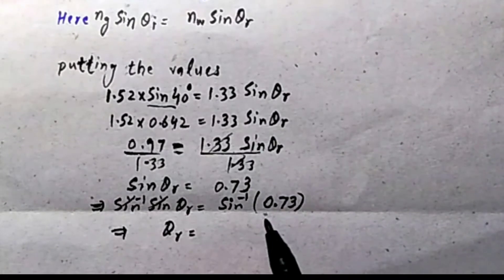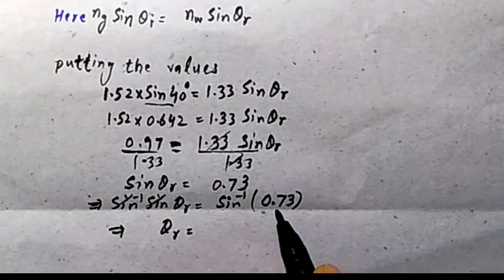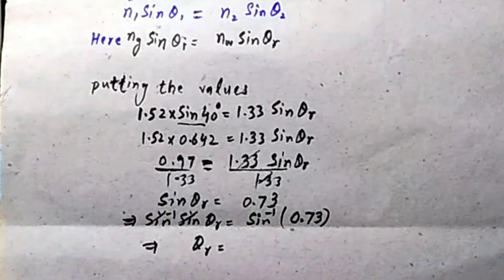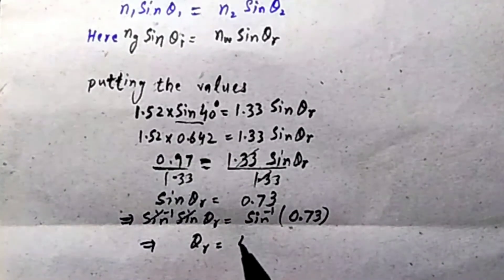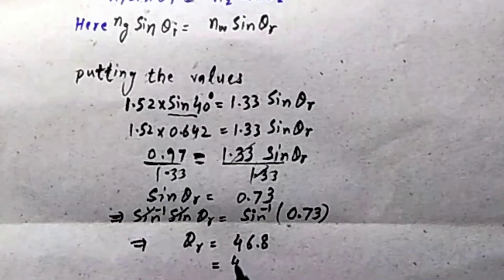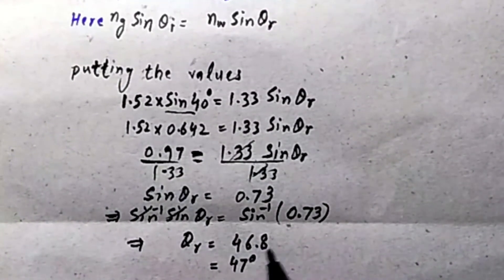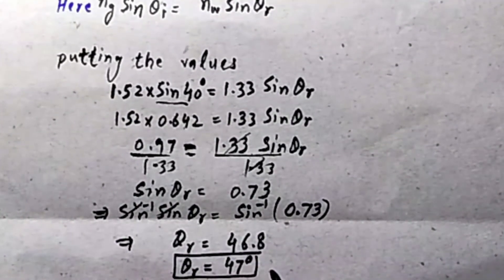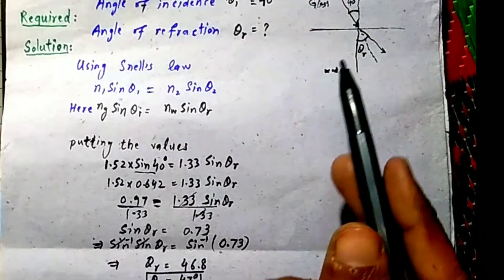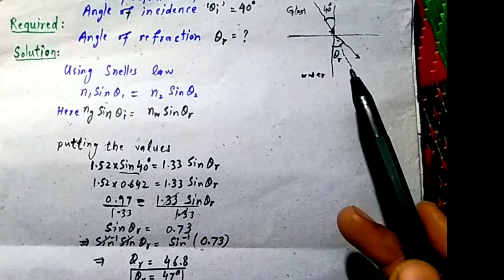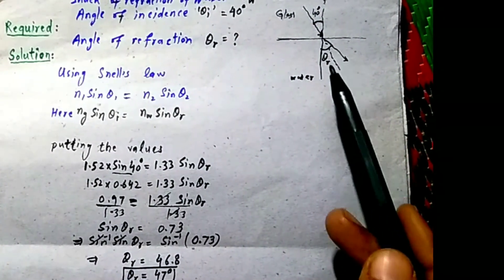sin⁻¹(0.703) gives approximately 46.8 degrees, rounding up to 47 degrees. So the angle of refraction in water is approximately 47 degrees. The diagram shows the angle and the medium density relationship.